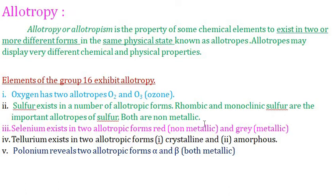Selenium exists in two allotropic forms: red (non-metallic) and grey (metallic). Tellurium exists in two allotropic forms: crystalline and amorphous. Polonium reveals two allotropic forms: alpha and beta. These are the allotropes of the Group 16 elements.